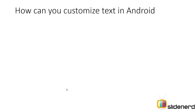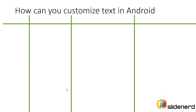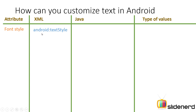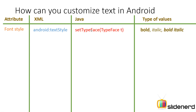First, how can you customize text? There is a table that shows the different attributes, the XML value for that, the Java value, and the type of values it supports. For font style, the XML attribute is android:textStyle, and in Java you have the method setTypeface that controls the same thing. The values it supports are bold, italic, and both of them combined at the same time.